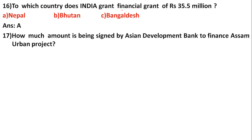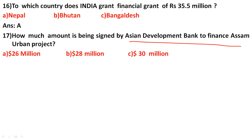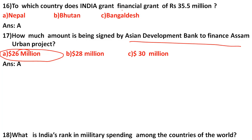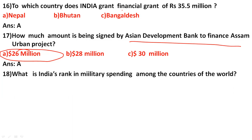How much amount is being signed by the Asian Development Bank to finance the Assam Urban Project? The Asian Development Bank's headquarters is in Manila, Philippines. The correct answer is option A: 26 million dollars.